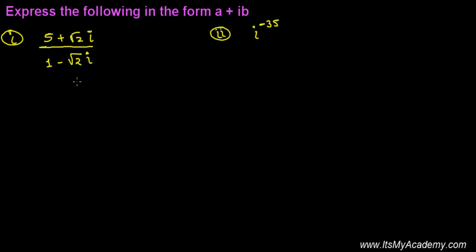We have another practice question for expressing a given complex number in the form a plus ib. The first question is: (5 + √2i)/(1 - √2i). Whenever you get this type of problem, always try to rationalize it.